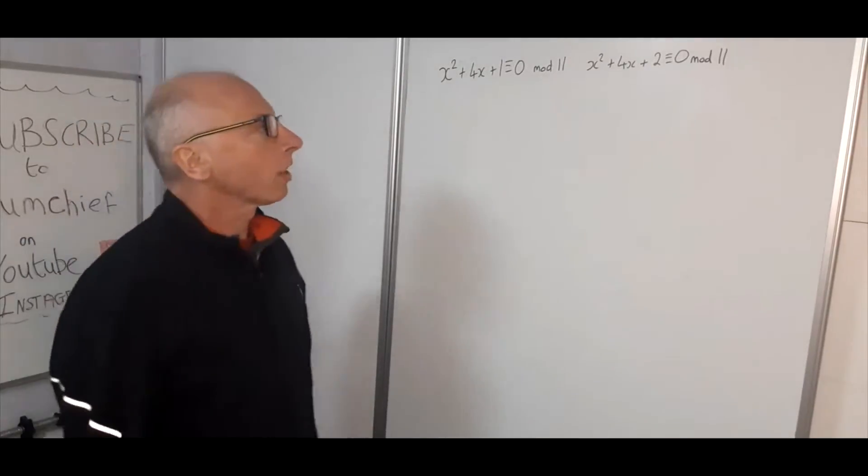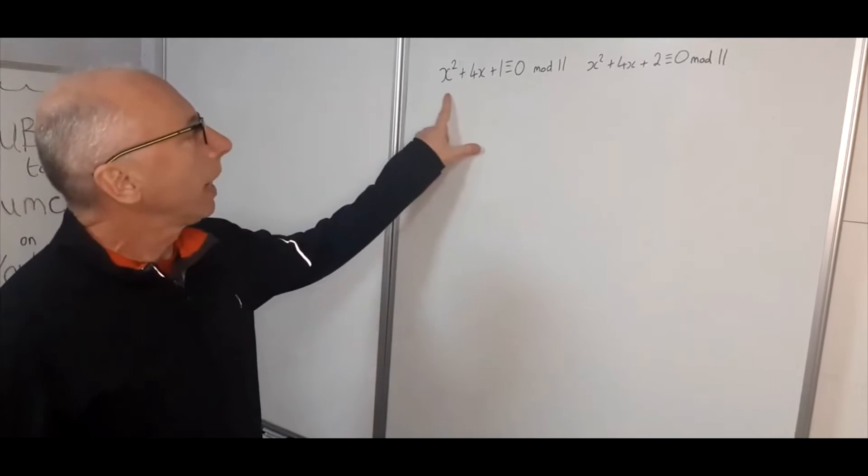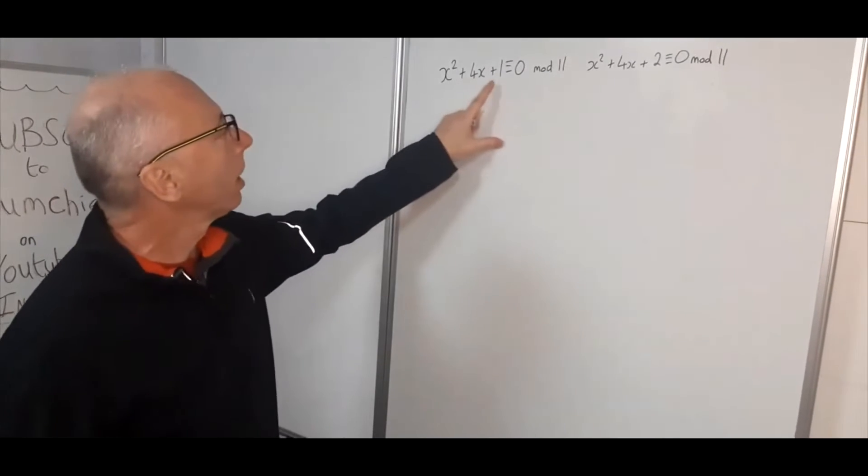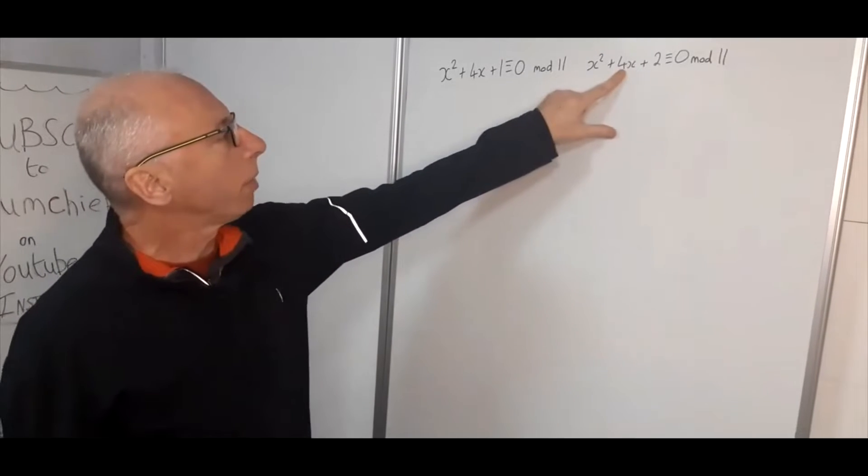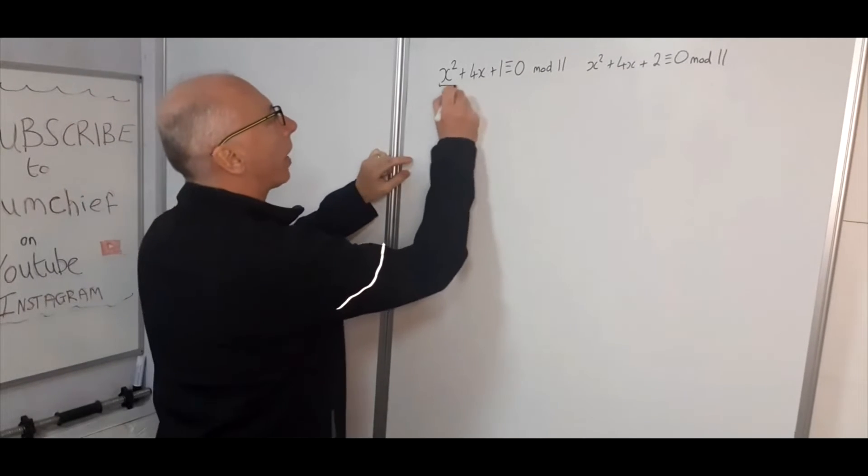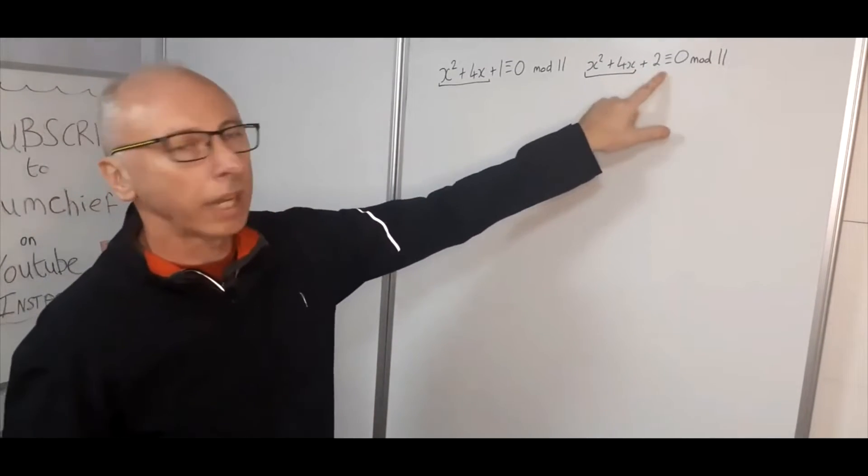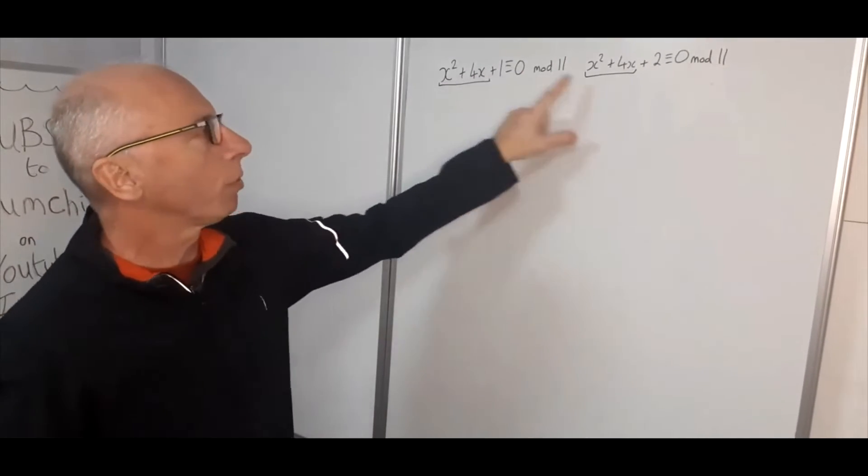Okay so we're going to look at some quadratic congruences here and you'll see that these two questions here are pretty similar. We've got x squared plus 4x in both, I'll just underline that these two are equal, but we've got plus 1 and plus 2 and they're both modulo 11 and congruent with 0.